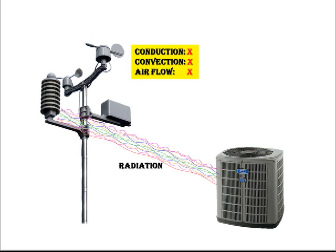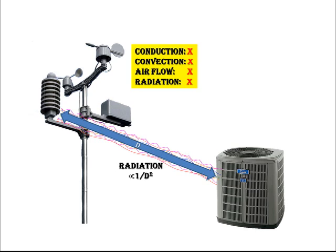Our last chance is radiation. Here the distance becomes critical, because radiation falls off with the square of the distance. So if you are standing 10 feet away from the air conditioning unit, you will be receiving 1% of the heat that you would be at 1 foot distance. So radiation seems unlikely unless they are very much closer together than they seem.